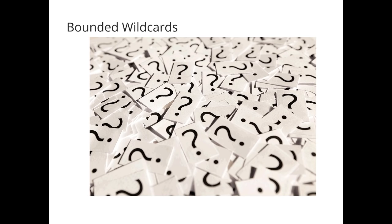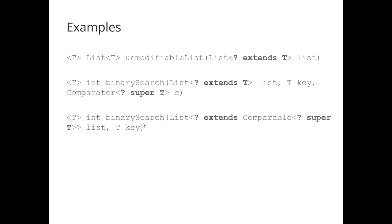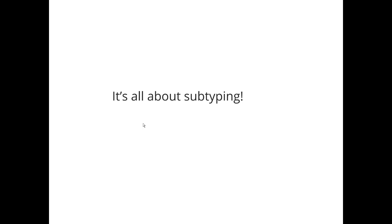Next feature: wildcards — the question marks. Sometimes you see question marks all over generics. We're going to talk about things like List<?>, ? extends T, ? super T, and even nested combinations. What's going on here? Ultimately it's all about subtyping and creating flexible, easy-to-use APIs.